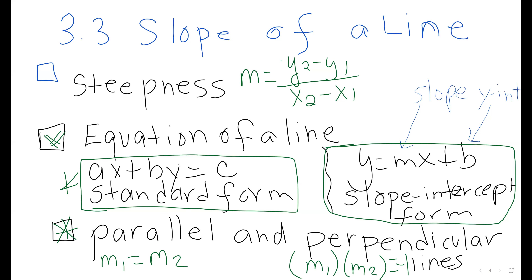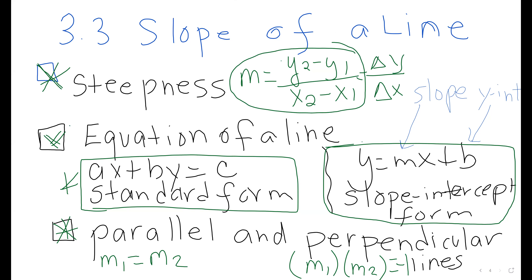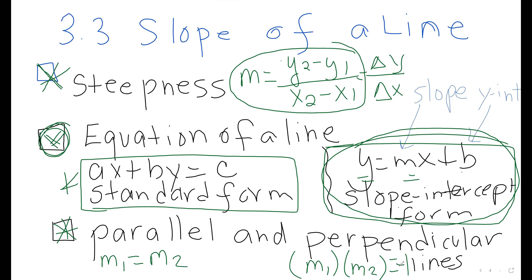To summarize section 3.3 — slope of a line: we talked about steepness and the slope formula m = (y₂ − y₁) / (x₂ − x₁). We covered the slope-intercept form y = mx + b, which lets you identify slope and y-intercept directly. And we learned that parallel lines have equal slopes, while perpendicular lines have slopes whose product equals −1.